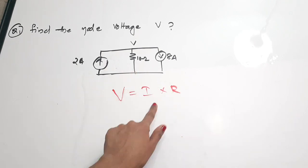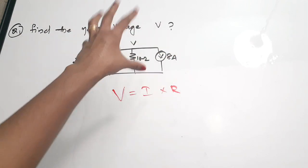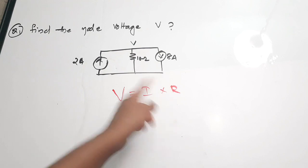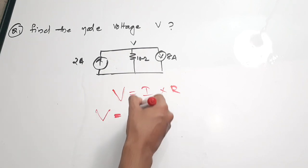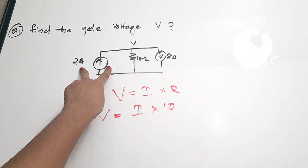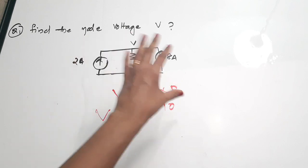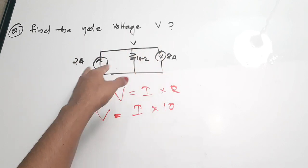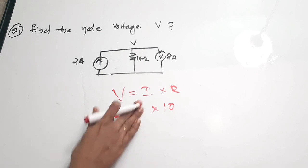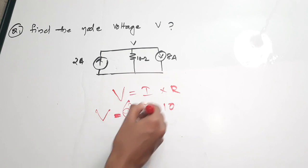Here v is the voltage we need to find, i is the current — which will be the sum of currents coming and going — and r is the only resistance, which is 10Ω. There are two current sources: 2 ampere and 8 ampere. One is coming and one is leaving, so you take the difference. Currents coming in are positive and currents leaving are negative.